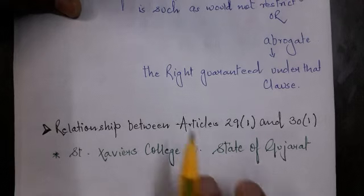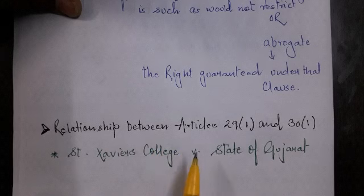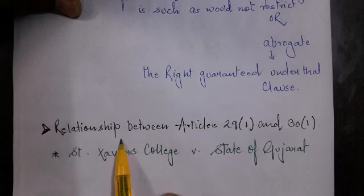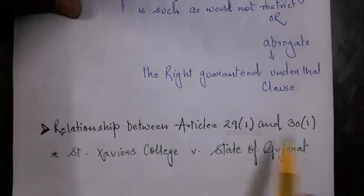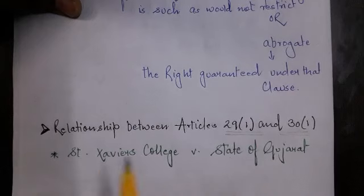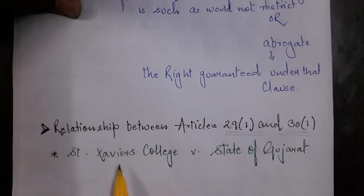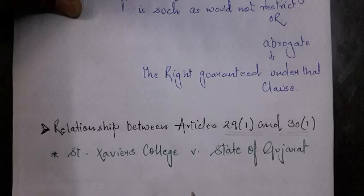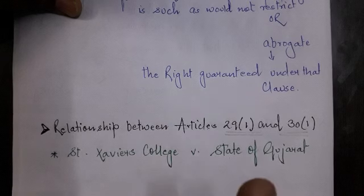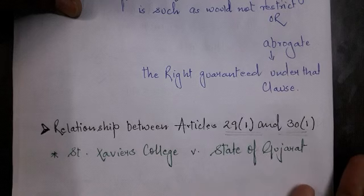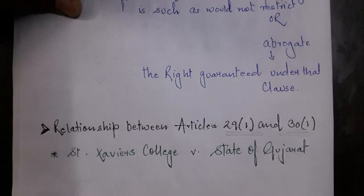Now we will discuss the last topic of today's lecture — the interrelationship between Article 29 and Article 30. The very important case regarding this is St. Xavier's College versus State of Gujarat. We will see how the Supreme Court analyzed the interrelationship between Article 29 and Article 30 of the Constitution of India in this case.